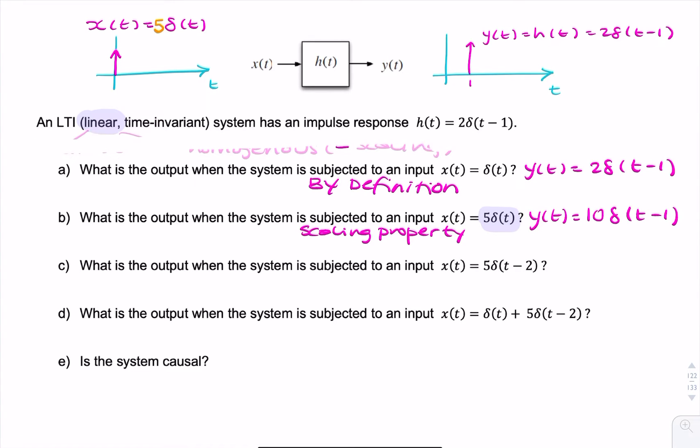Next question says, what's the output if the input was a scaled and shifted impulse? So now our input is no longer this impulse centered at 0. Our input is now a scaled and shifted impulse at 2. Because we know the system is time invariant, if there's a shift in the input, that should result in a shift in the output.